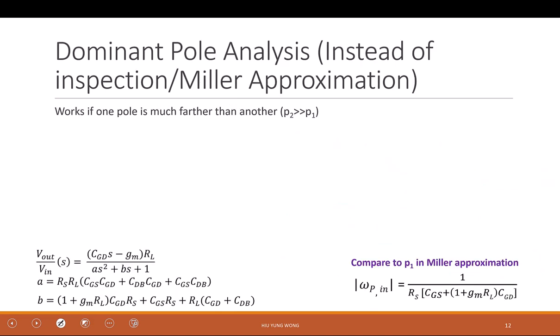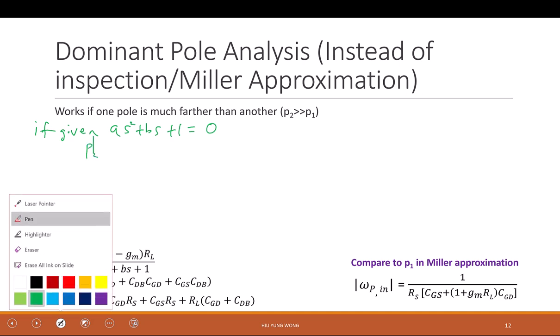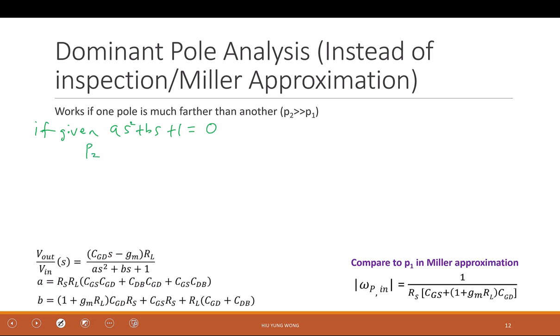So what can we do? If given A S squared plus B S plus 1 equal to 0, and you know that it has, of course, it has two poles because this is second order.